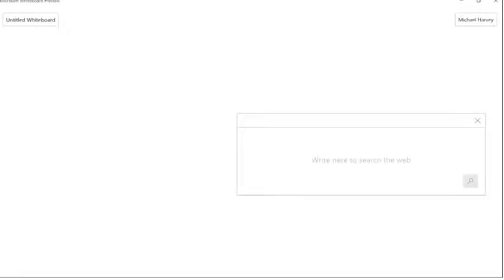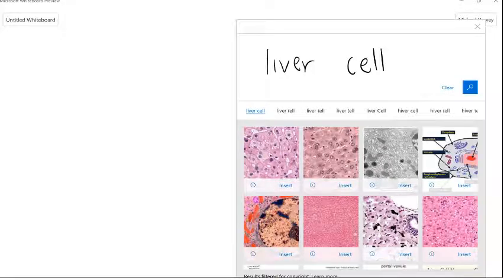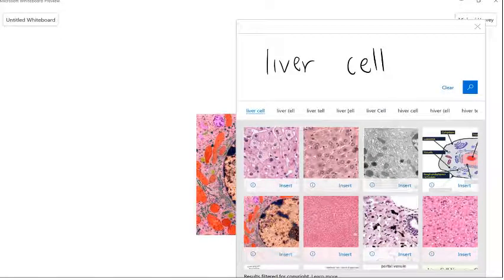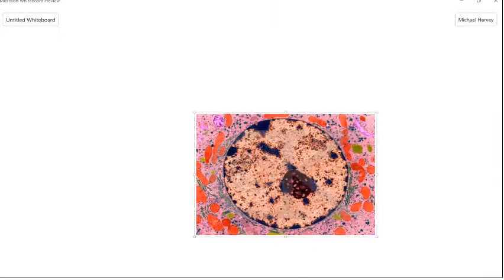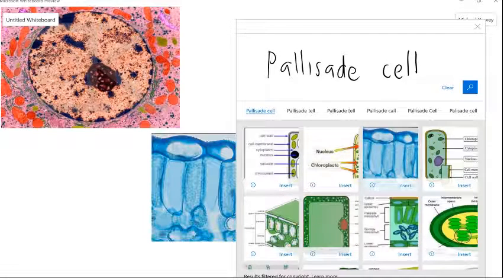From the animal world, let's look at a liver cell. Let's just find a magnified image of a liver cell. There's one there. Let's move that around to the top. And from the plant world, let's look at a magnified image of a palisade cell. Let's see if we can find a magnified image.